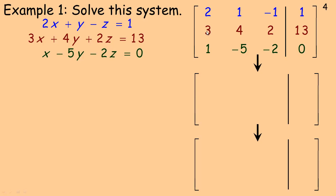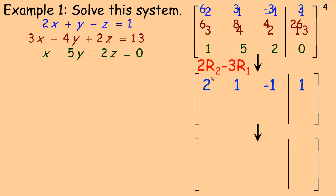If we were doing elimination, we could multiply the first equation by 2 and the second by 3 and subtract them — same idea here. I write out the first row: 2, 1, negative 1, 1. I'm going to work on changing the 3 to a 0 by taking twice row 2 minus 3 times row 1. Twice row 2 gives: 6, 8, 4, 26. And 3 times row 1 gives: 6, 3, negative 3, 3.